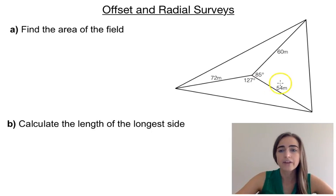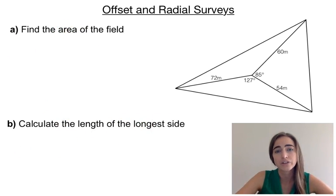So in the example we're going to have a look at, we've been given a plane table radial survey. So it's given us that angle in there is 85 degrees. And this one in here is 127. And we're asked to do two things. We're asked to find the area and then calculate the length of the longest side. So let's have a look at the area first.